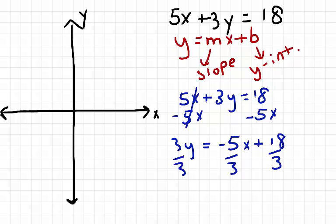When I do this, I need to make sure that I'm dividing 3 across every term. Now my equation reads y equals negative 5 thirds x plus 6.